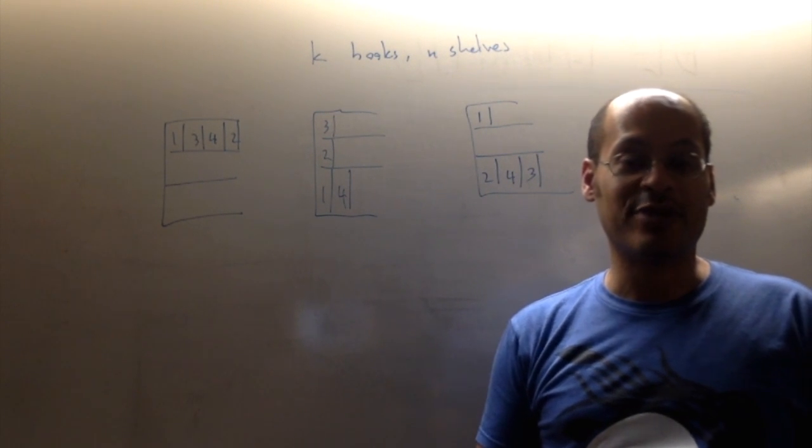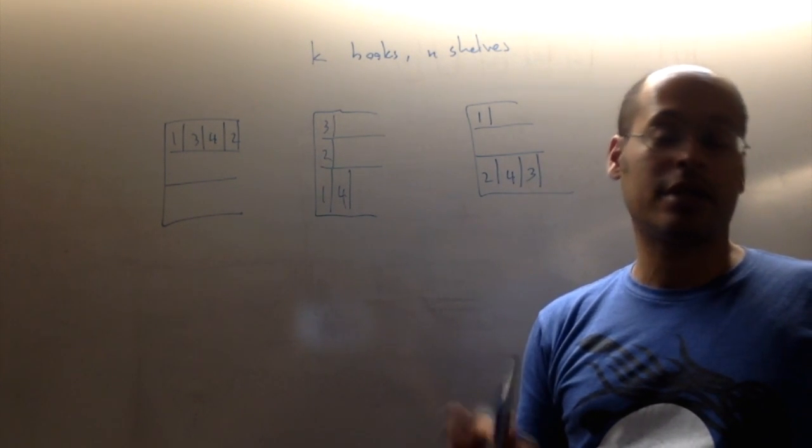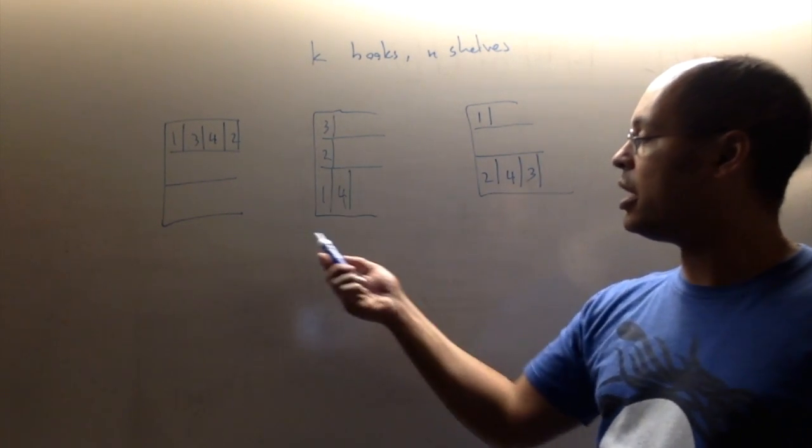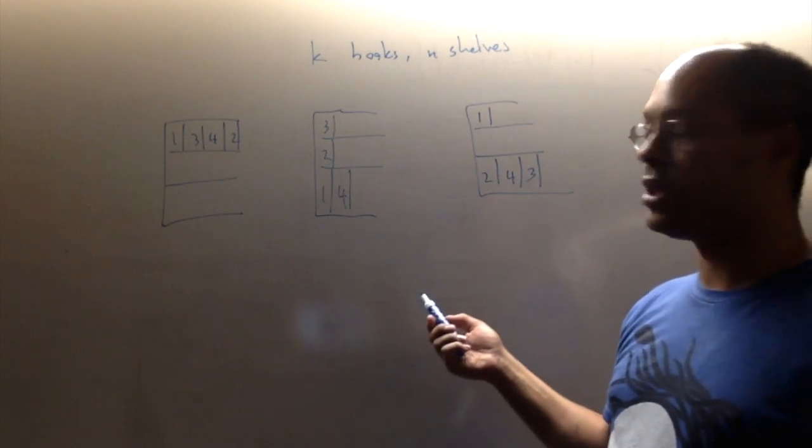Let's take a look at this problem in another way just for fun. So let's consider the original problem of taking k books and putting them on n shelves. Now I've drawn some example diagrams of some arrangements of books. These are four books distributed on three shelves.